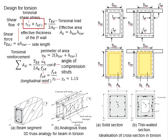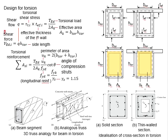The shear force can also be defined by an equation where the torsional shear stress is multiplied by the effective thickness of the wall resisting the torsion. This torsional load can then be computed as the shear force, expressed as the shear flow times the side length. The shear force is calculated element by element, where H_torsion refers to the side length of the element.